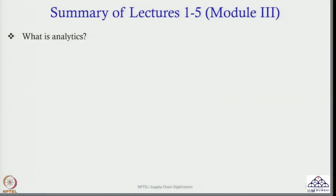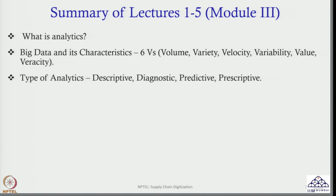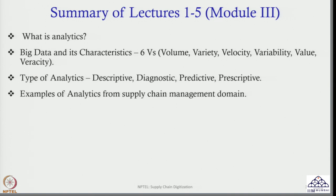Let us summarize what we covered in the last 5 lectures of module 3. We basically focused on what is analytics and then observed the various characteristics of big data — the 6 Vs: volume, variety, velocity, variability, value, and veracity. Then we discussed the various types of analytics: descriptive, diagnostic, predictive, and prescriptive, and gave numerous examples from supply chain management, specifically focusing on predictive maintenance.